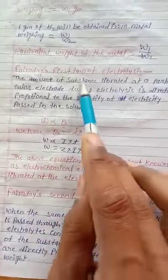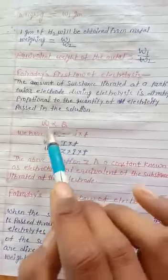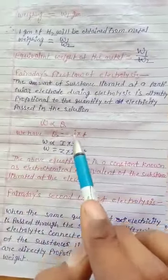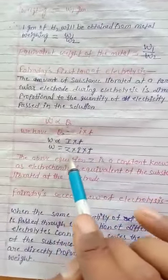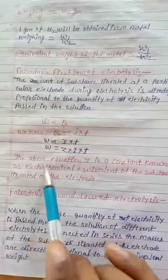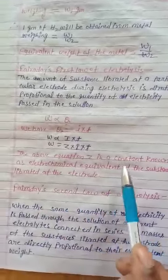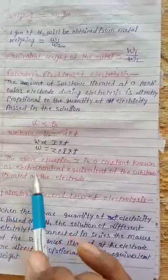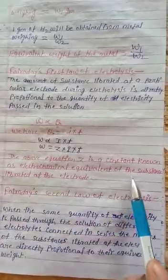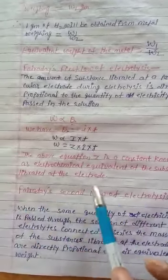The amount of substance liberated W is proportional to Q. We have Q equal to IT. W proportional to IT. W equal to ZIT. Z is a constant known as electrochemical equivalent of the substance liberated at the electrode.